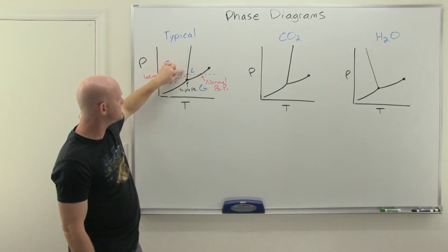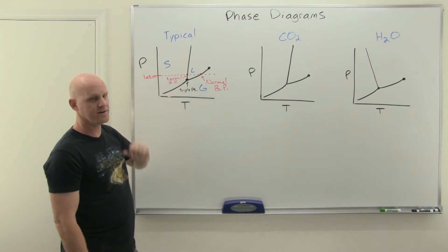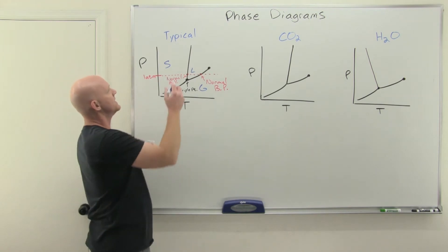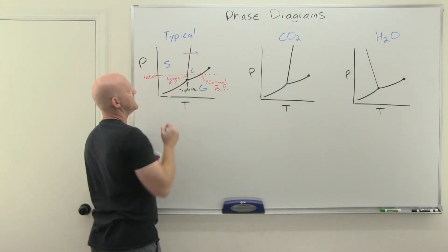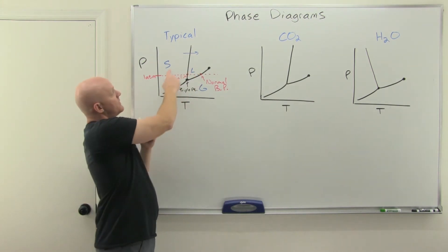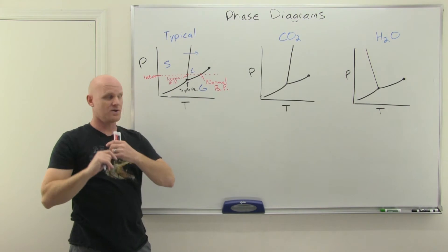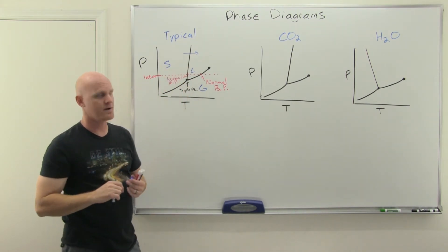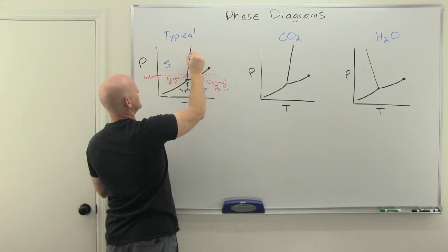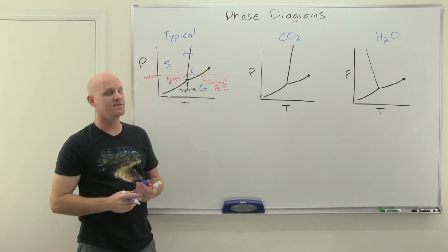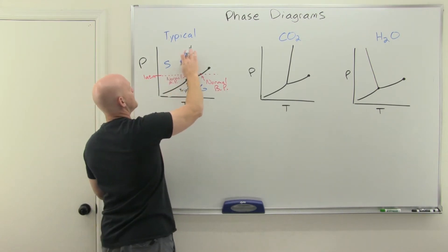You've got to know your lines of equilibrium and the triple point. You should also be able to identify any of your six phase changes. The solid-liquid line represents either melting or fusion going one way, or freezing/crystallization going the other way. Liquid to gas is boiling or vaporization, and gas to liquid is condensation. Solid to gas is sublimation, and gas to solid is deposition or vapor deposition — the ones you're most likely to forget.